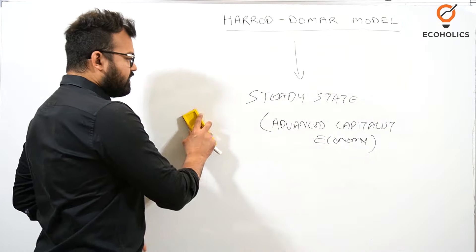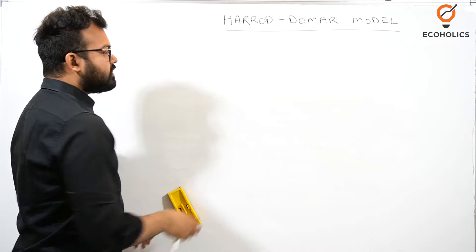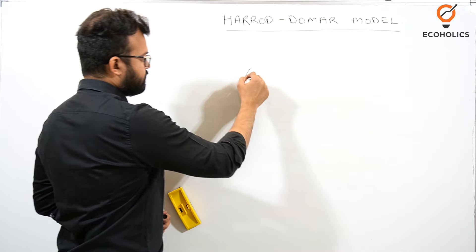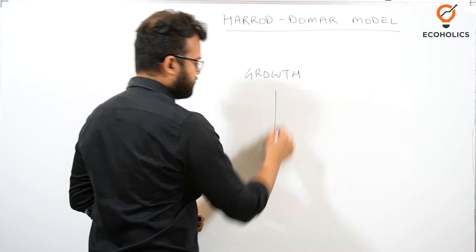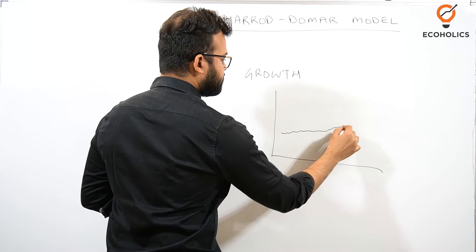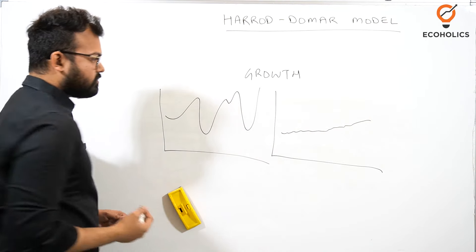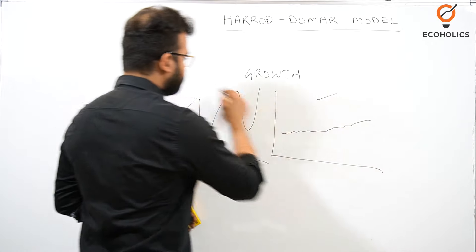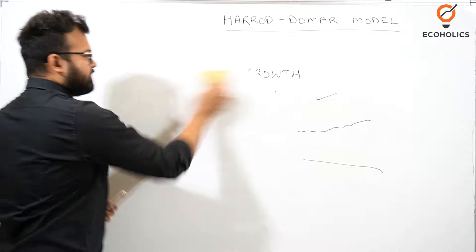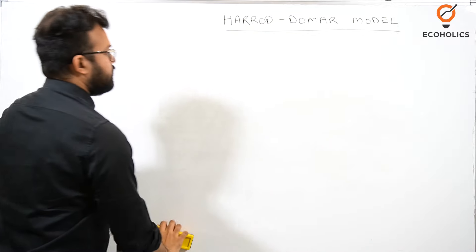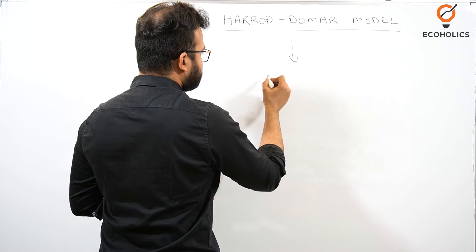We live in India and we are also concerned with growth — growth is a very important part of an economy. Whenever we think about growth, even in daily life, we want a steady-state growth. It means growth should be stable and consistent, not full of ups and downs. We always prefer smooth, steady growth over volatile growth, and this model explains how we can achieve that.